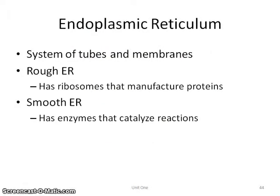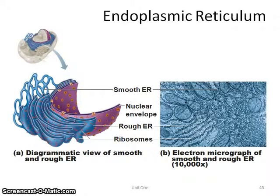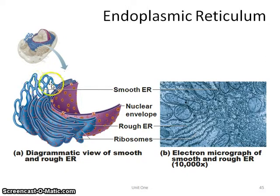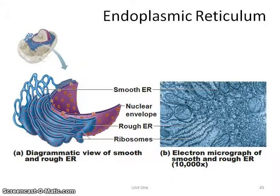Next up, the endoplasmic reticulum — there are two different kinds: rough and smooth. The rough is named that because it has ribosomes on the outside that make it look kind of bumpy. We have the rough, with the little red dots, and the smooth, which is free of ribosomes, over here. The key thing to know is that it manufactures proteins and can help to catalyze reactions within the cell.